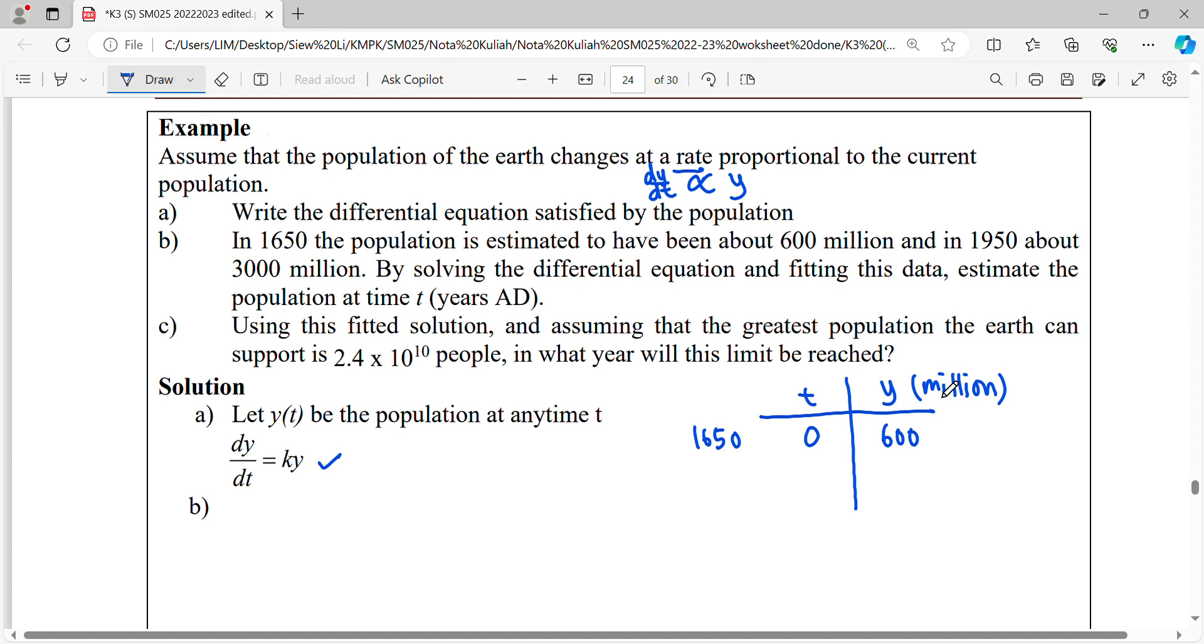Then in the year 1950, from 1650 until 1950, we have a timing of 300. The time here refers to years. So the population now will become 3000 million.